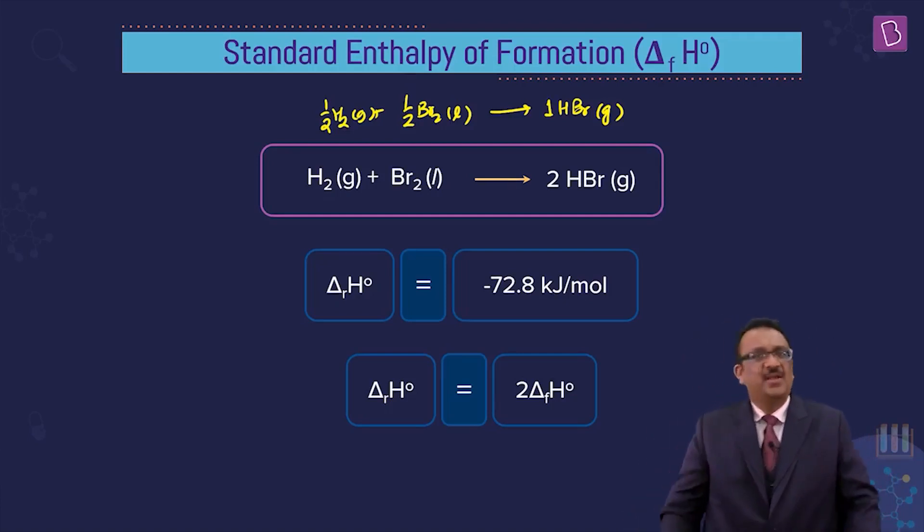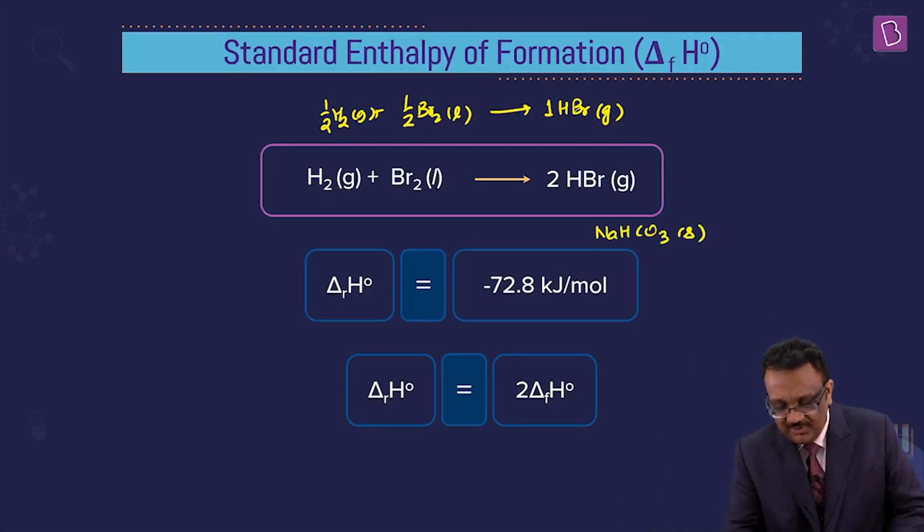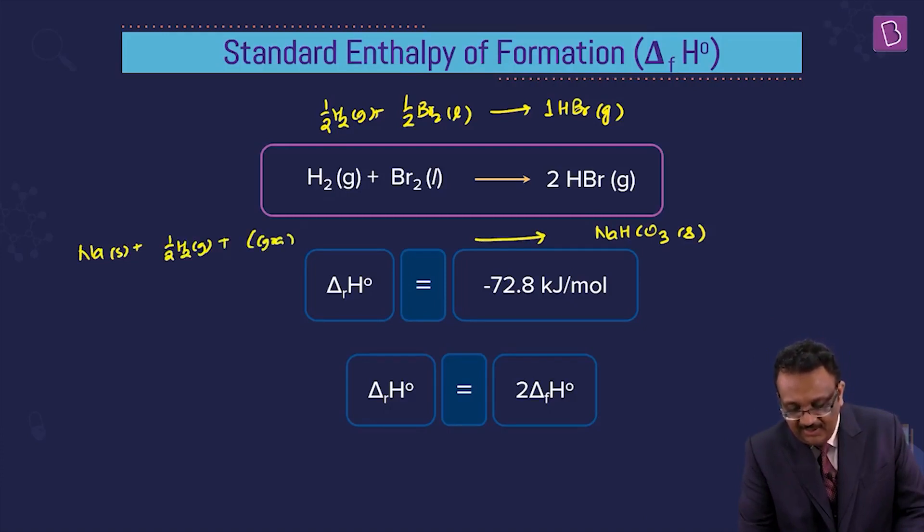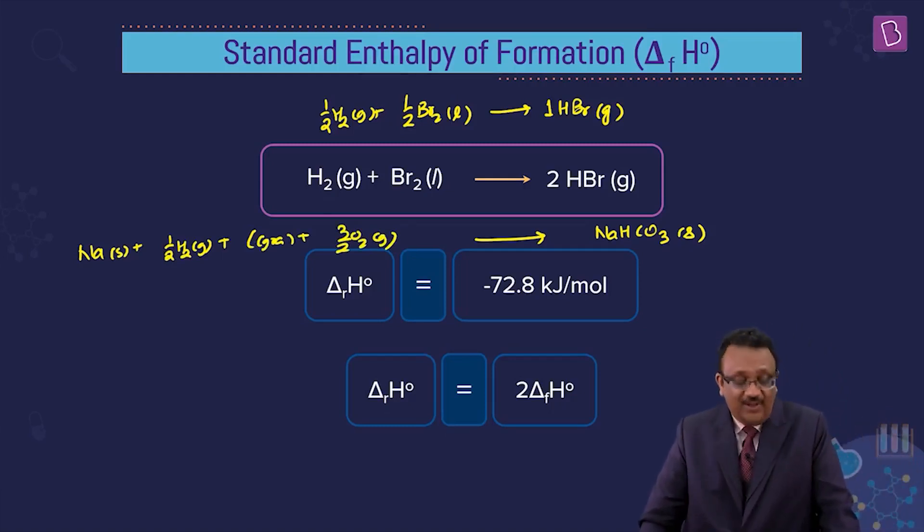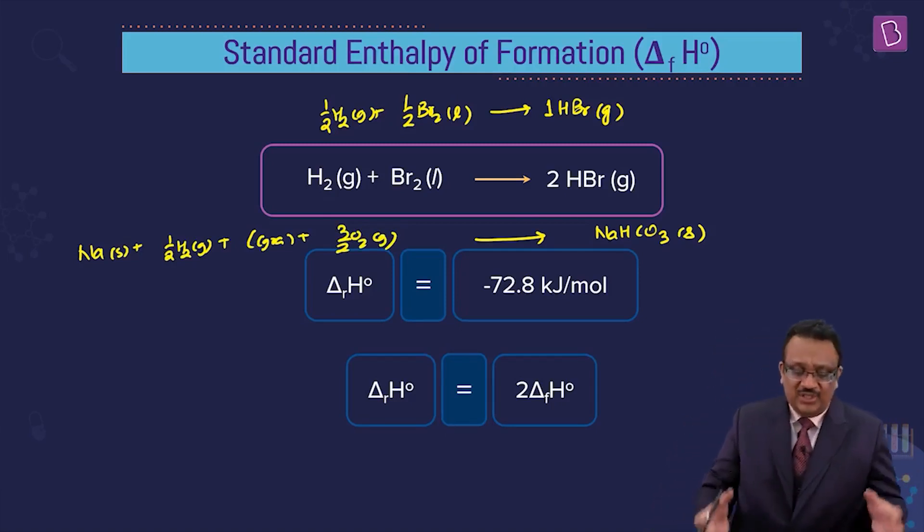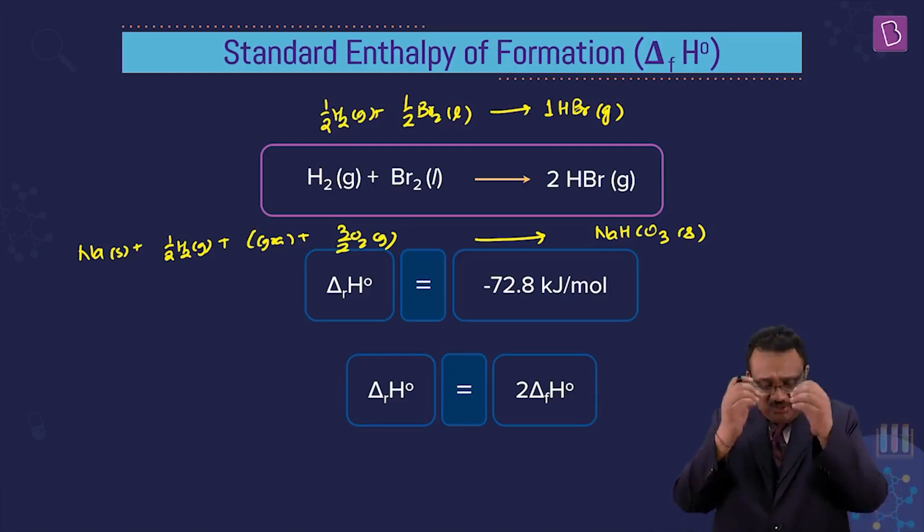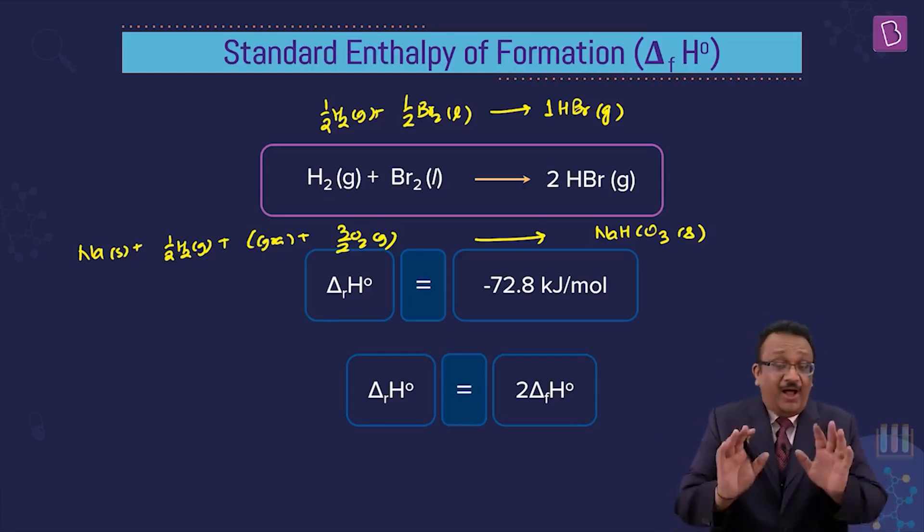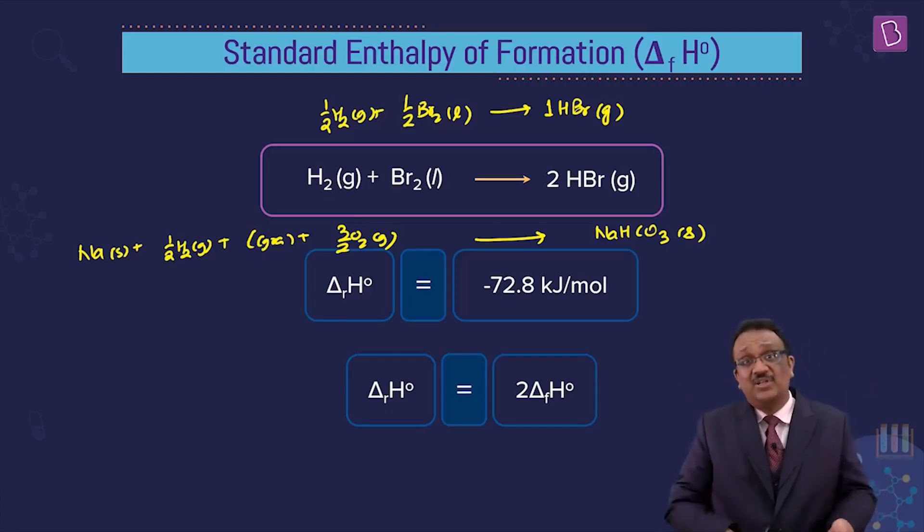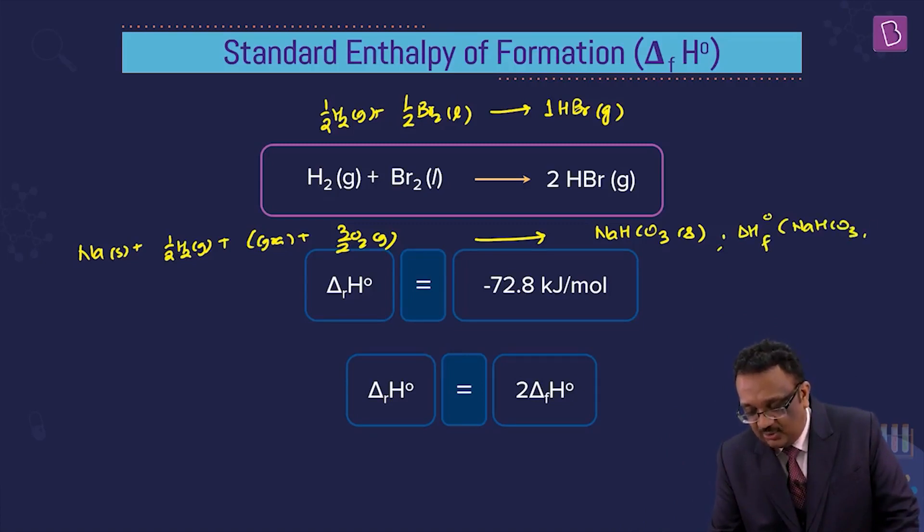If we have a large compound, say we want to make sodium bicarbonate, NaHCO3 solid. The elements in the standard state are sodium Na solid, hydrogen half H2 gas, carbon graphite plus 3 by 2 O2 gas. Sodium, hydrogen, graphite, oxygen. If you combine these elements, we will make sodium bicarbonate. We say that if this reaction is done, the delta H will be called enthalpy of formation of NaHCO3 solid.